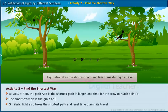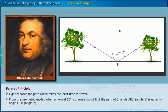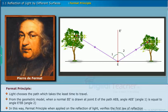Let us learn why light chooses the shortest way during its travel through an activity. Fermat's principle states that light chooses the path which takes the least time to travel. From the geometric model, when a normal EE' is drawn at point E of the path AEB, angle AEE' (angle 1) is equal to angle E'EB (angle 2). In this way, Fermat's principle, when applied on the reflection of light, verifies the first law of reflection. Let us now try to gain more insight on the phenomenon of reflection from different surfaces.